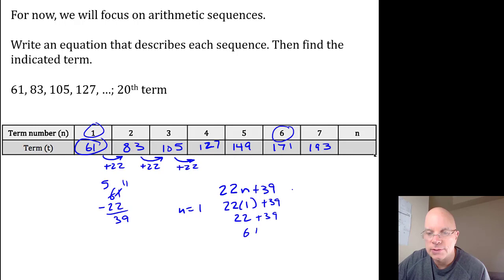Let's go with a big one, n equals 6. If the rule is really 22n plus 39, then I should get 171 when I substitute 6 for n. 6 times 22 is 132, and when you add 39 to 132, you get 171.